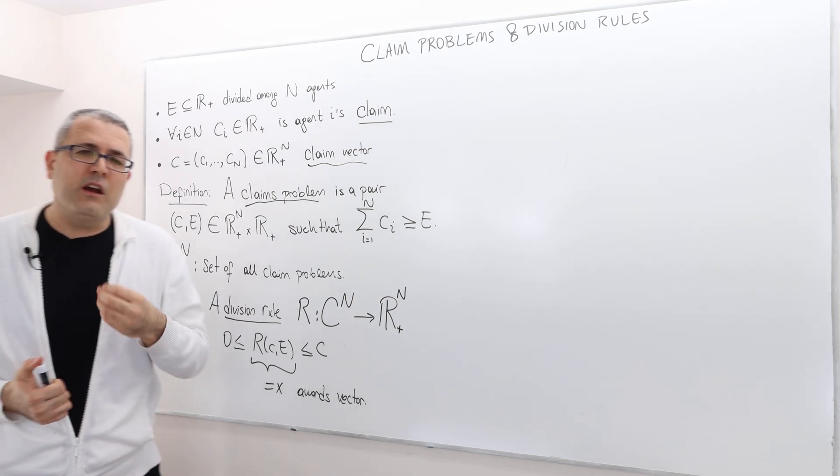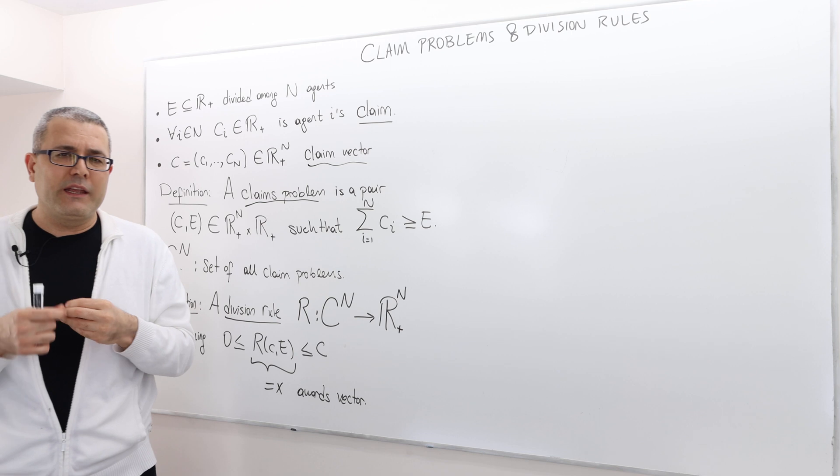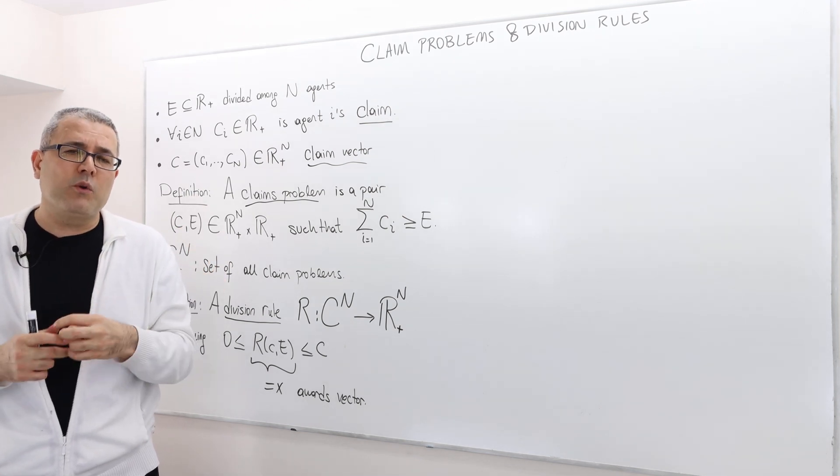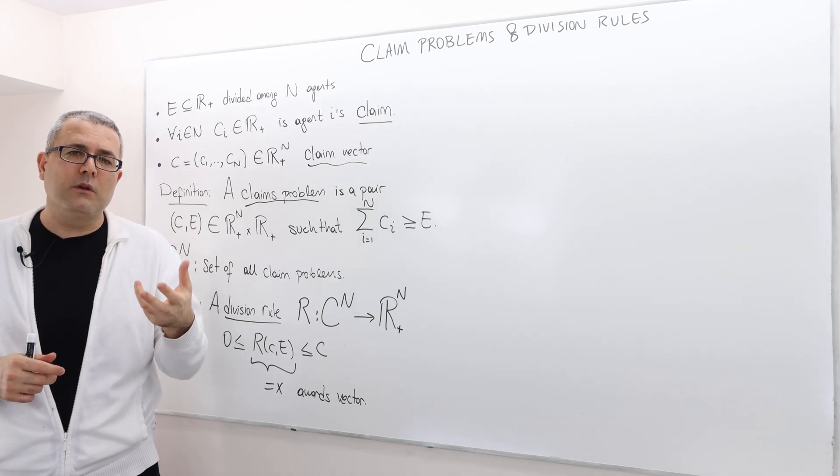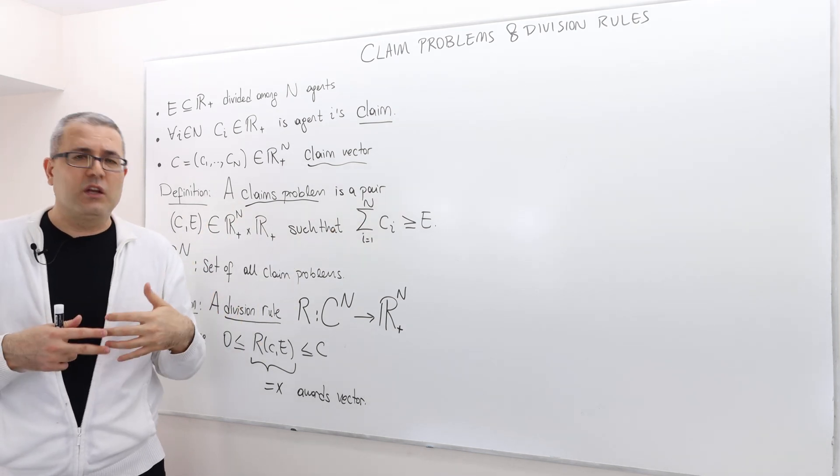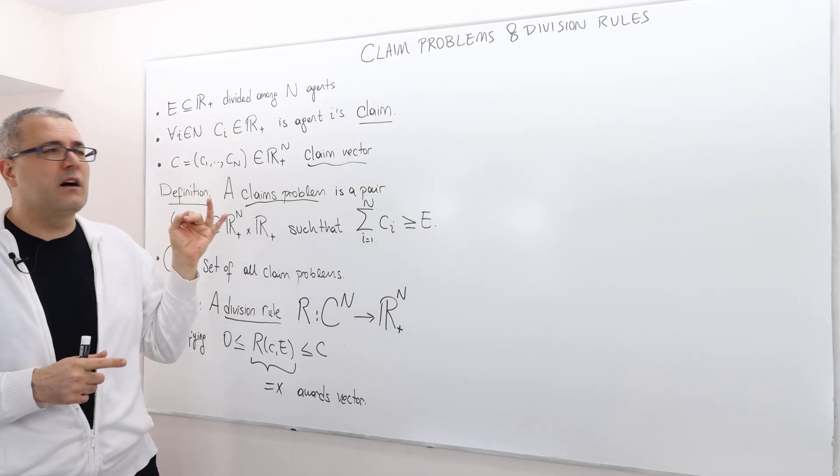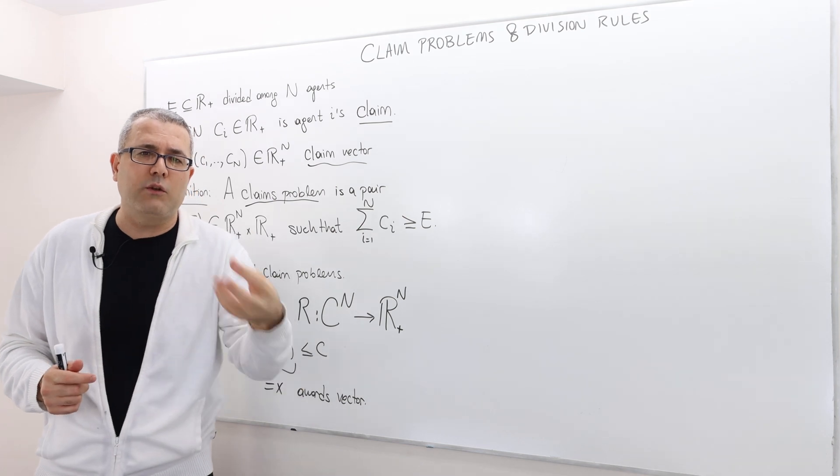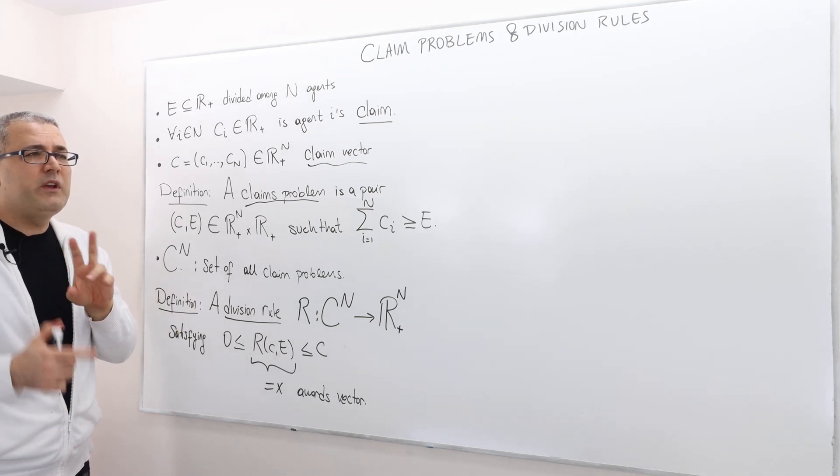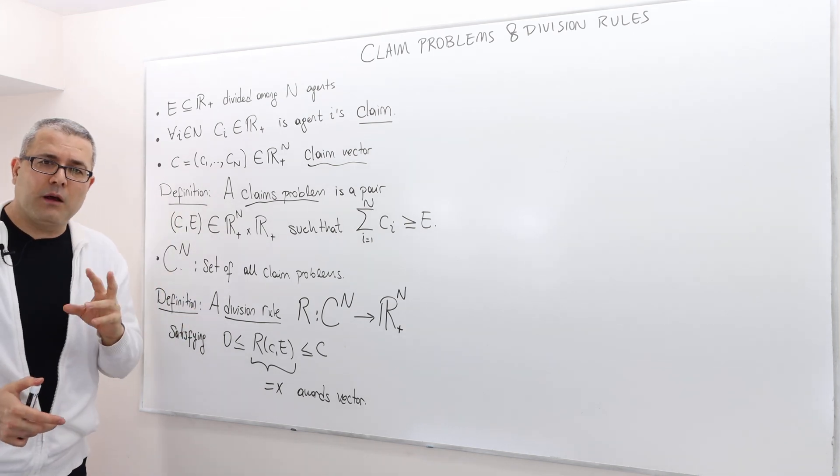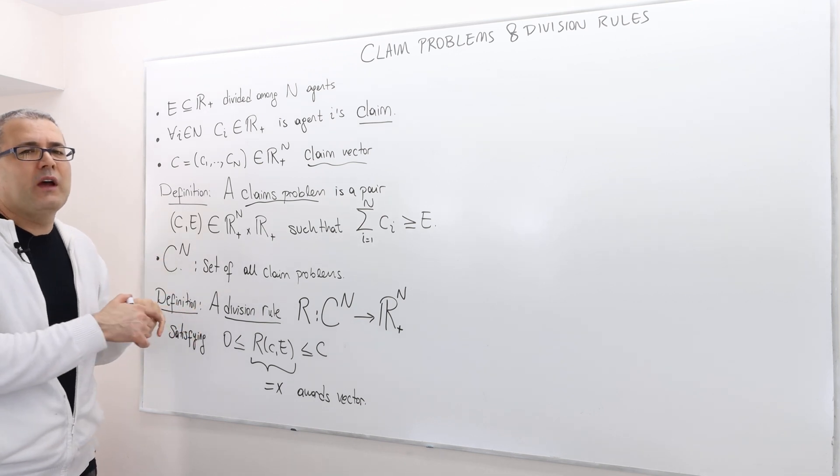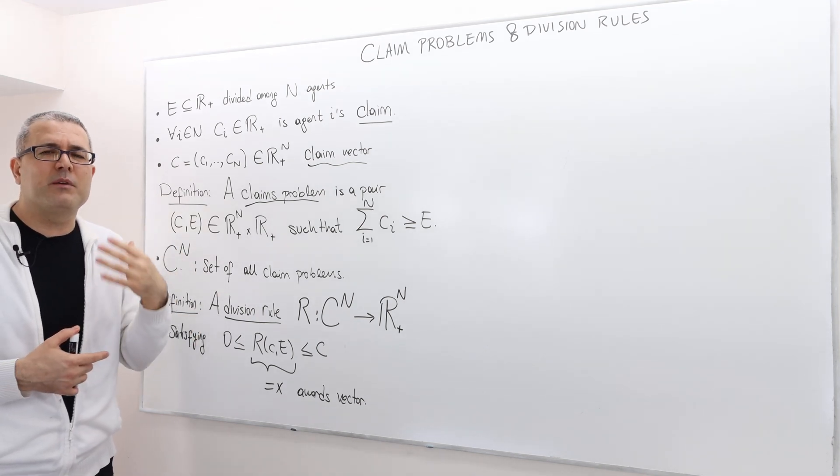All right, so again, we are using a cooperative approach. So instead of modeling how these guys negotiate or play some game between each other, we don't know, we just take it as a black box. What we do, we just say, let's create a rule which tells us how to split the surplus E among N individuals by just looking at the E, the surplus, and the claim vector. All right, so it's just a rule, sort of exogenous rule that we can pick and use at any problem we like.